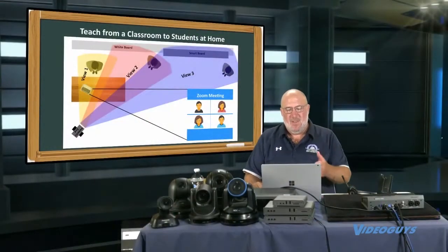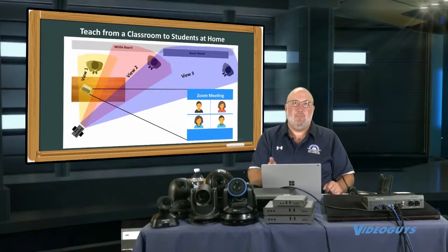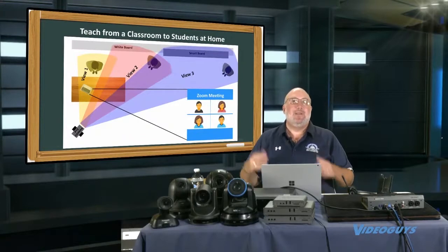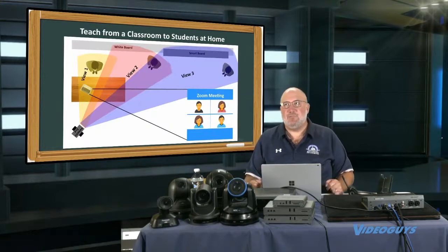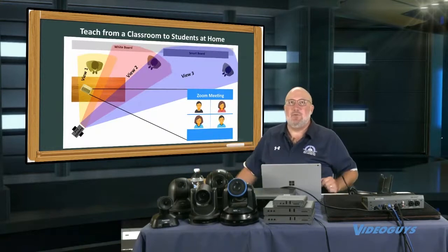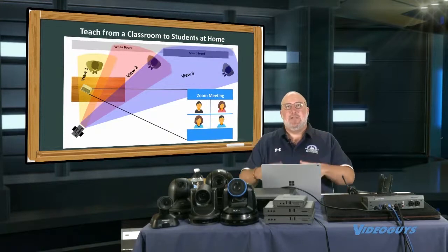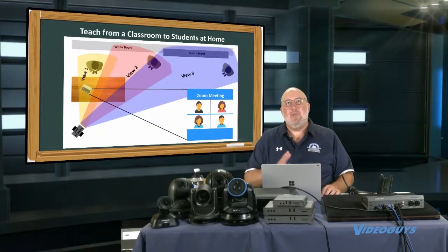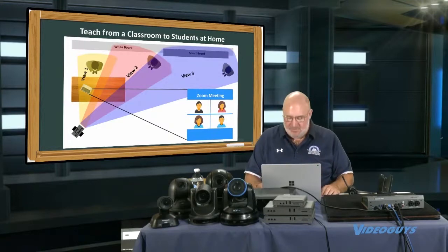If you're in a classroom, you can have three views: a view of you, a view with a whiteboard or smartboard, and a wider view of another board or visual — maybe human anatomy for a biology teacher, lab materials, math manipulatives, or language word boards for early reading. This is how a PTZ camera gives you a more engaging lesson, and you can share your screen or display it on your smartboard.